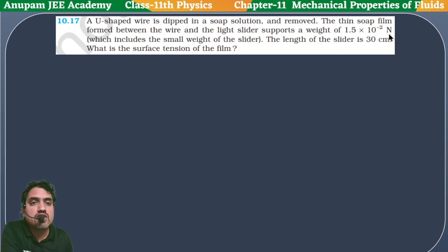We have a U-shaped wire frame and here a slider is attached. This slider is handling a weight W = 1.5 × 10^-2 newton.